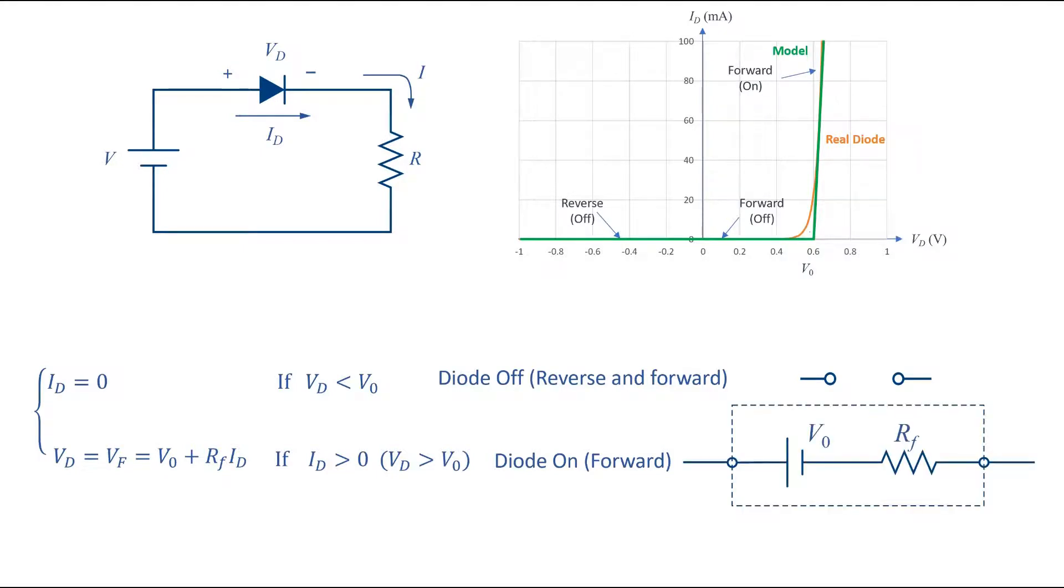This is the model or equivalent circuit in forward bias or diode on condition. The equation can be shown in this form as well and as we can see the slope of the line equals to 1 divided by RF.